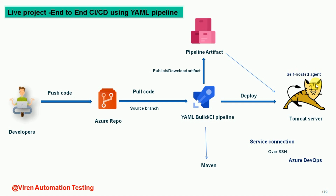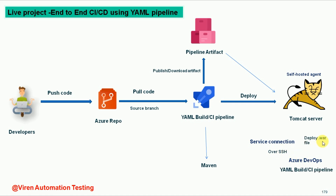Now we are not going to work with the Microsoft hosted agent — we have our own self-hosted agent, and this will work as an agent for our YAML CI/CD pipelines. We will change the agent machine information to this Tomcat server. To connect Azure DevOps so we can deploy to the Tomcat server or external agent, I am going to create a service connection called the SSH service connection. SSH will help us deploy our .war file via YAML CI/CD pipelines to the Tomcat server.